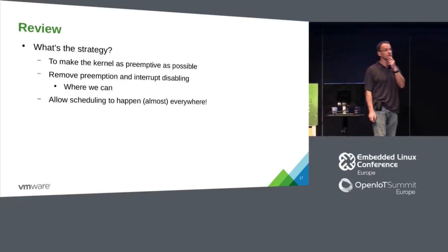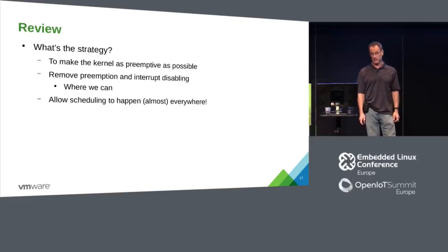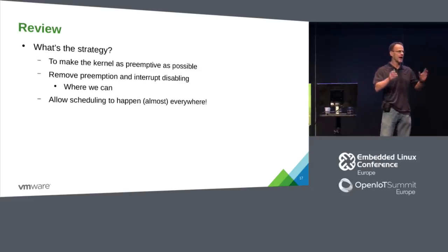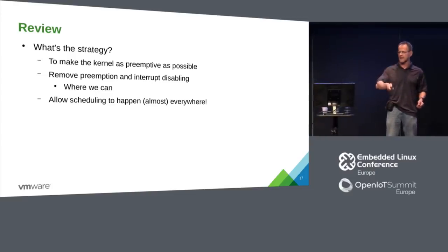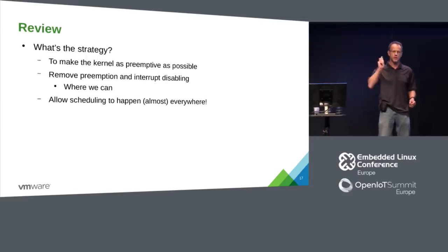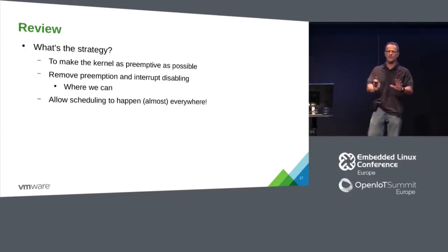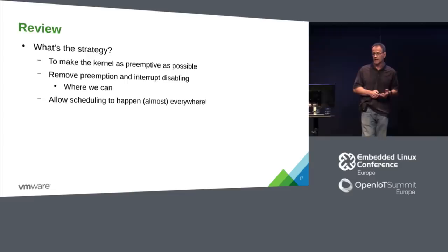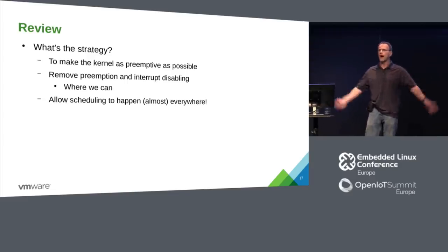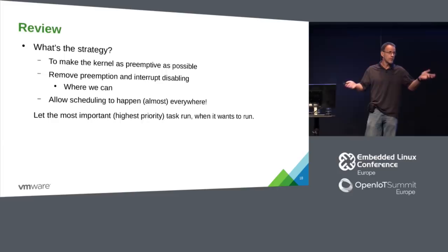What's our strategy for making Linux into a real-time OS? First, make it as preemptive as possible. Whenever a high-priority task wants to do something, let it do it as quickly as possible. Let the user determine what's important, and as soon as their defined task of importance wants to run, give it as much power as possible and try not to interrupt it. We try to remove preemption and interrupt disabling everywhere we can.